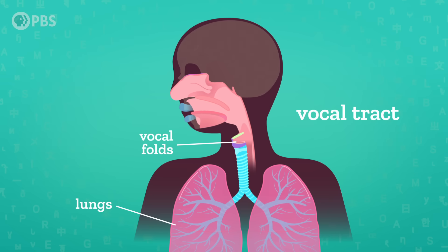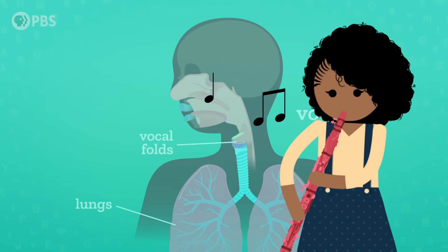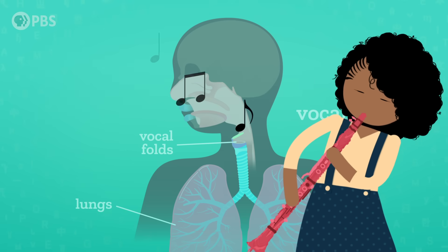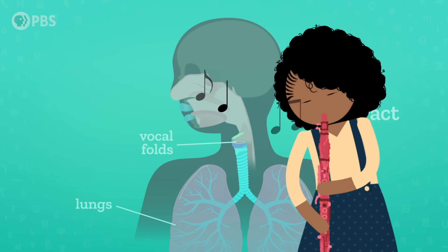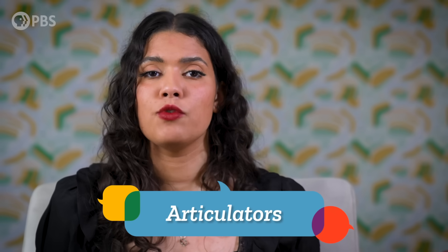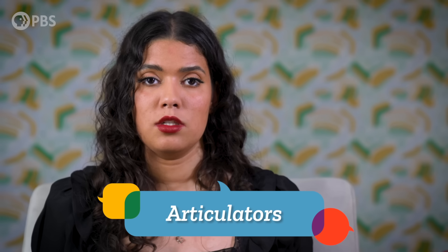We can change the shape of any part of the vocal tract to make or articulate different sounds. It's like a wind instrument. When air goes through it, it makes a sound. You're like a squishy, wet, neat clarinet that can articulate sounds — I'm sure that's an image you'll never forget. For spoken languages, the tongue, mouth, and the rest of the vocal tract are the articulators, the parts of the body that move to make language.